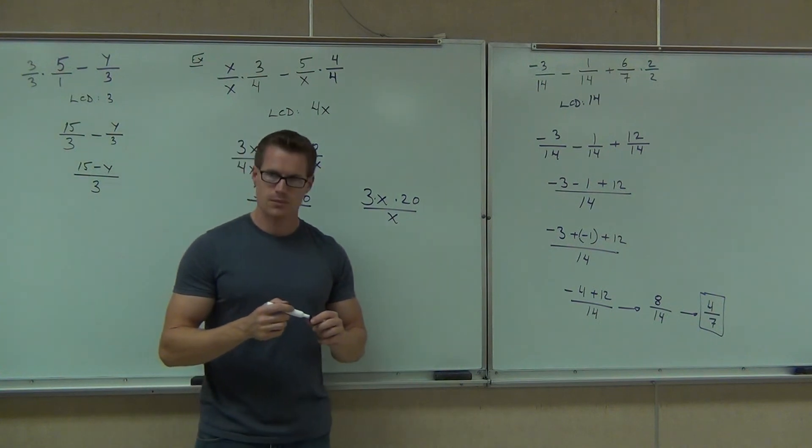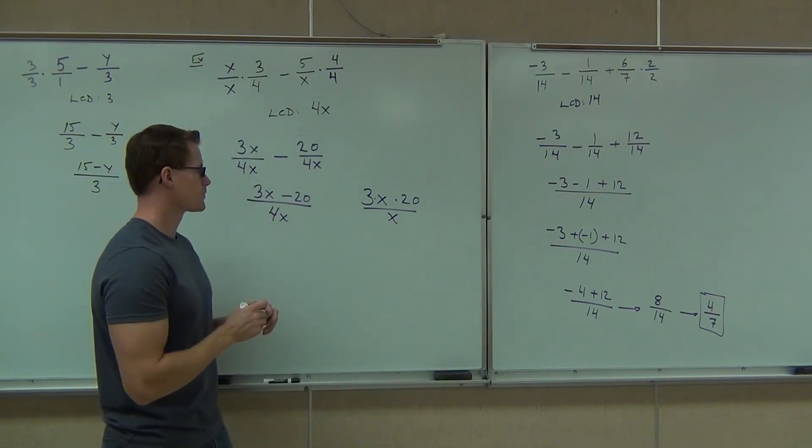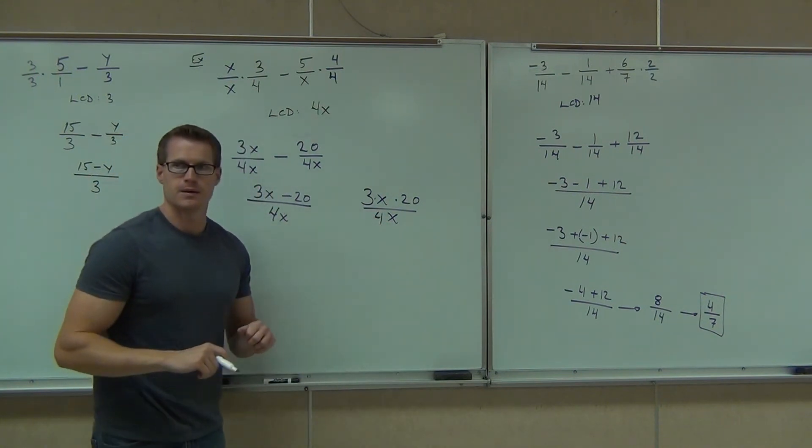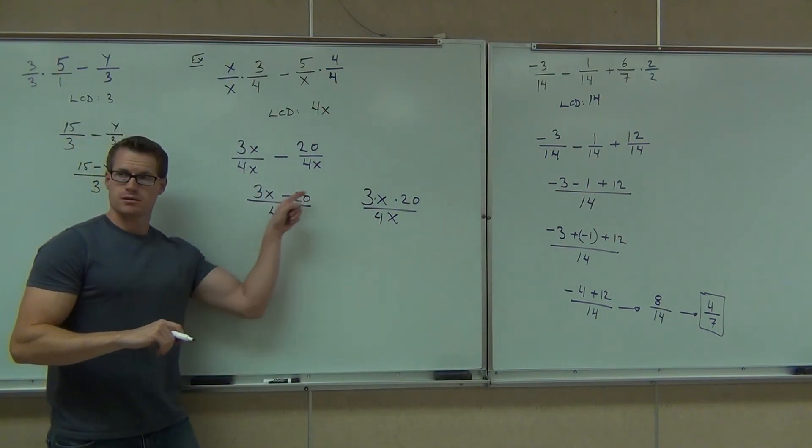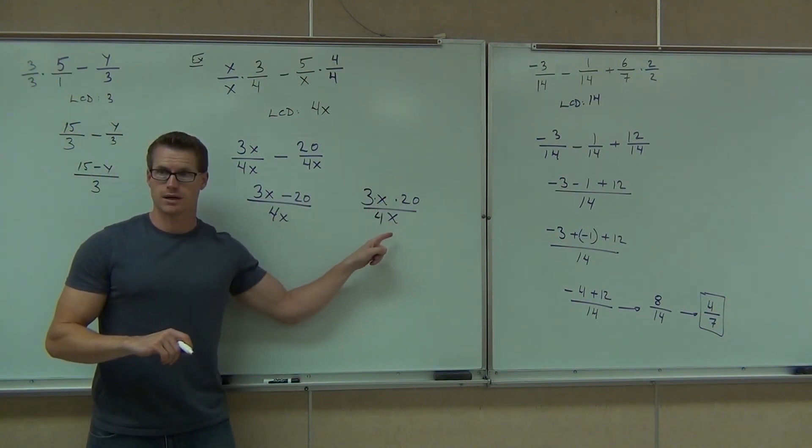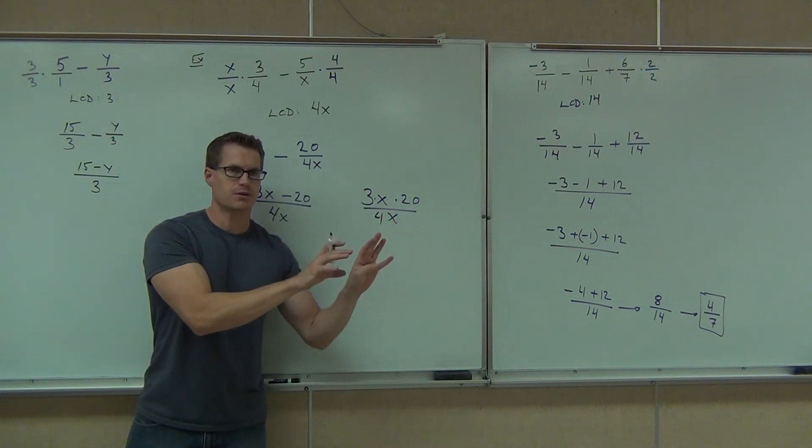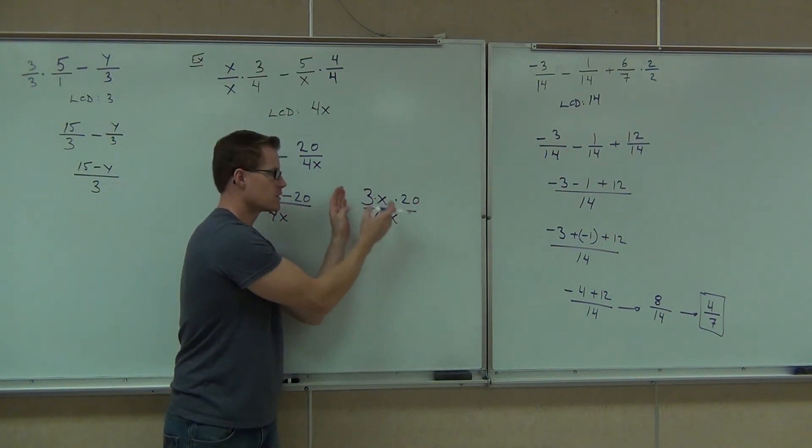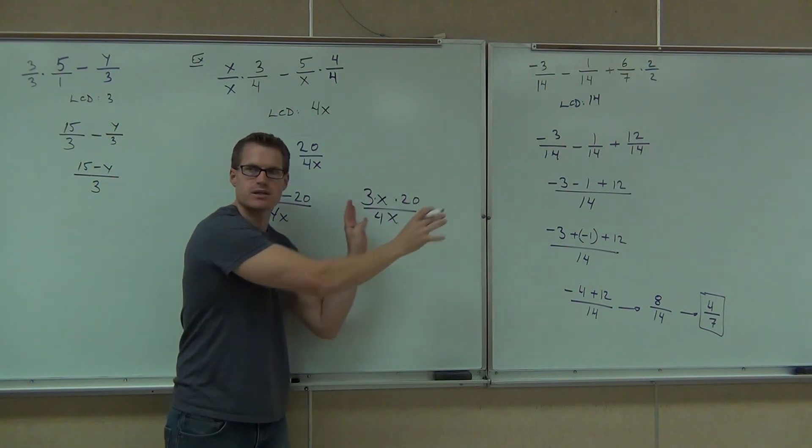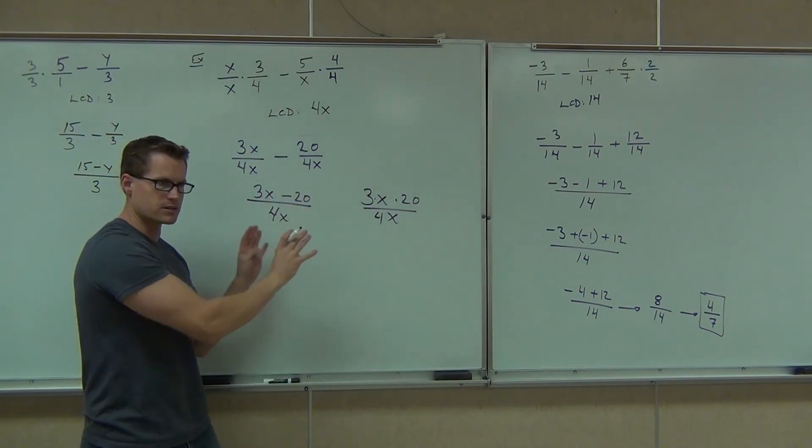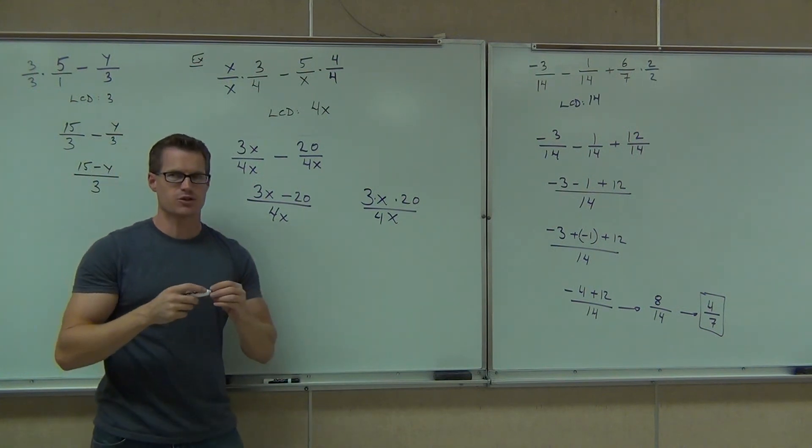Don't make that mistake and cross those out. The only time you ever can is if it would have been like this. Look, this is a different problem. Completely different. Now that those are multiplied, yes, absolutely. Those are factors. I can simplify factors. I cannot simplify terms. There's a difference here. As soon as that's connected to that subtraction, you can't cross it out. If it's being multiplied, absolutely.